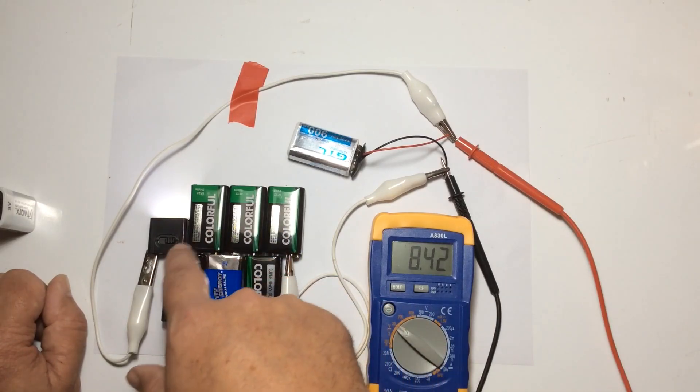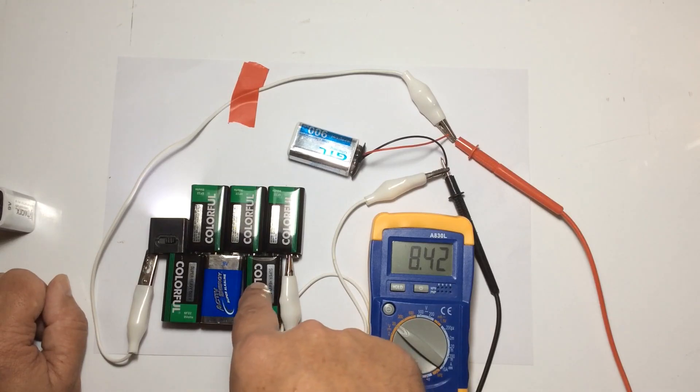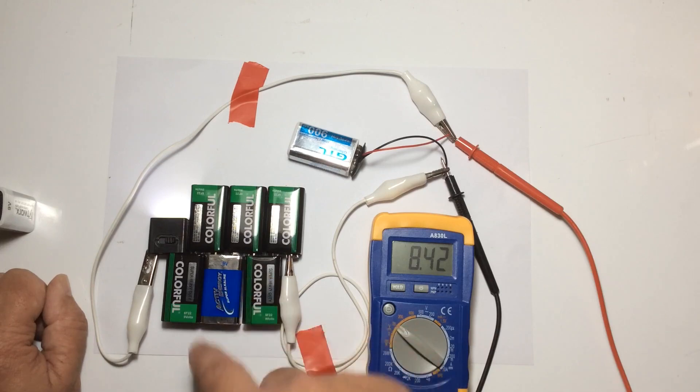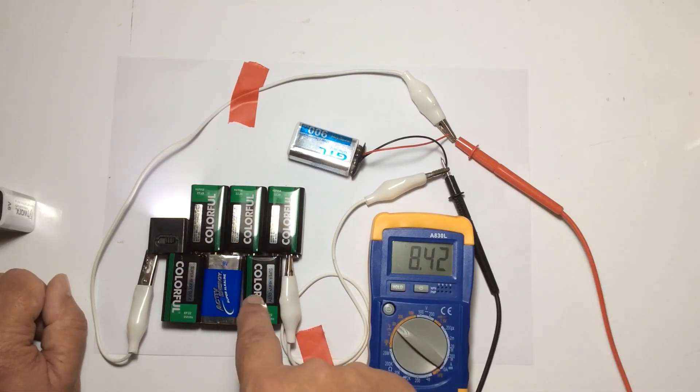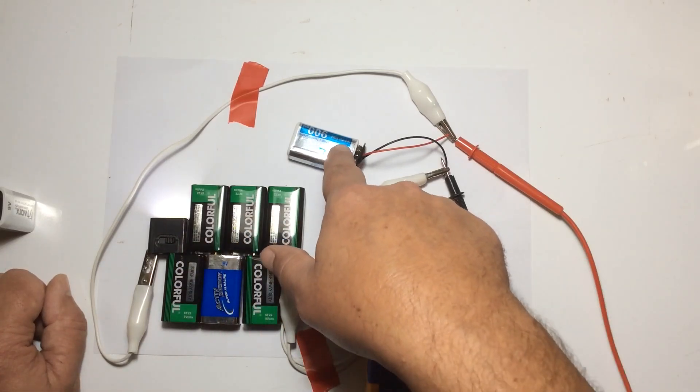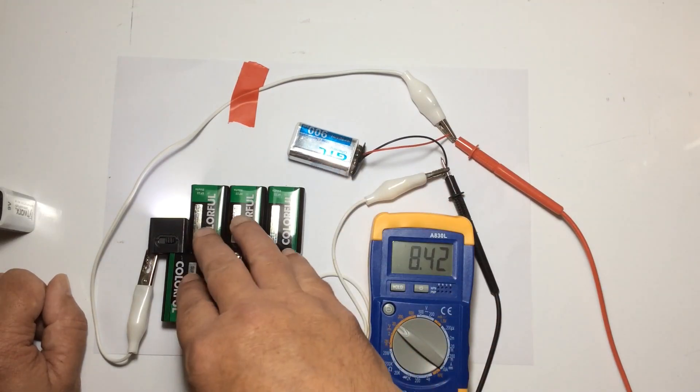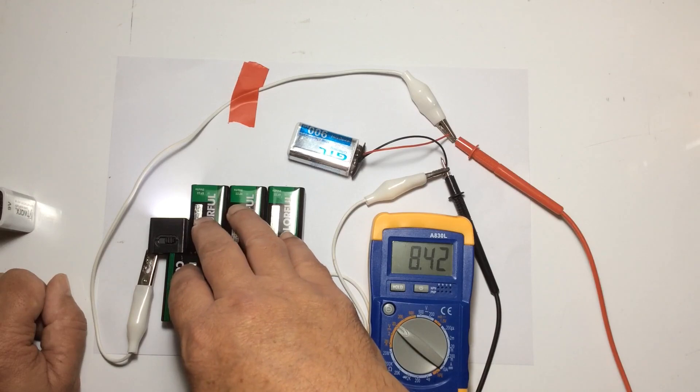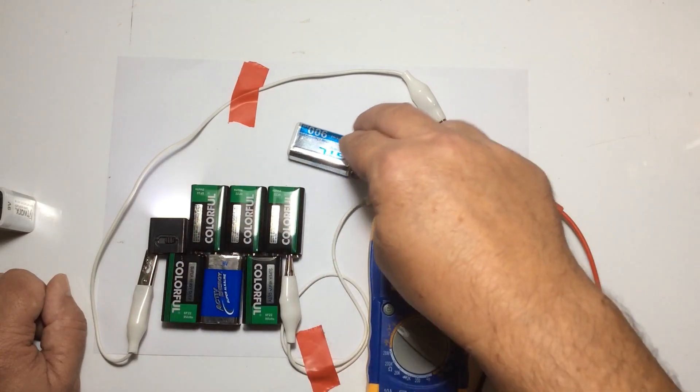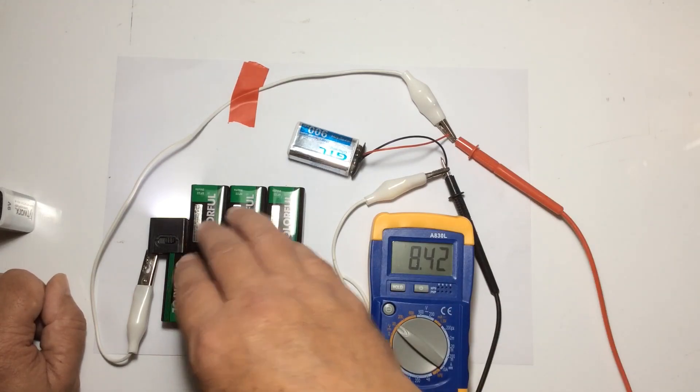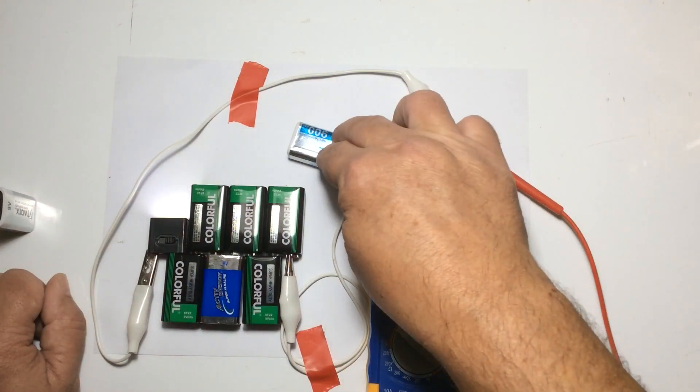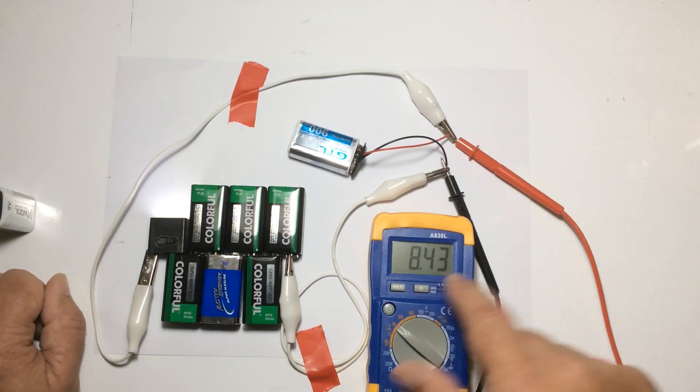Basically what you do is keep adding them in series until you get a suitable voltage. Ideally, you want to be aiming for around about 18 volts in this setup. The reason for that is because we're going into a 9-volt battery, so we need to be double the voltage on the primary side compared to the receiving side. So 18 volts here is what we try to achieve, and 9 volts is what we're feeding into. You can see it's still climbing.